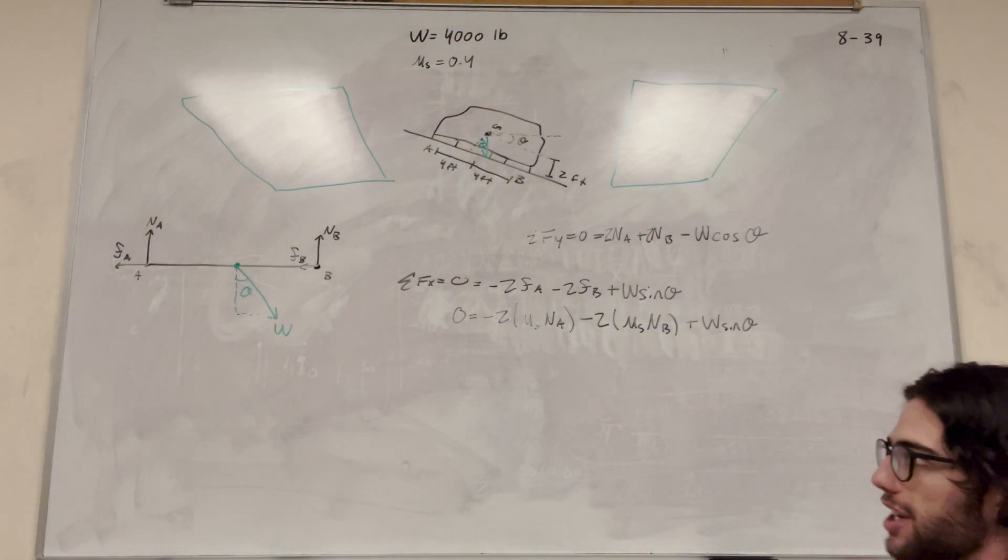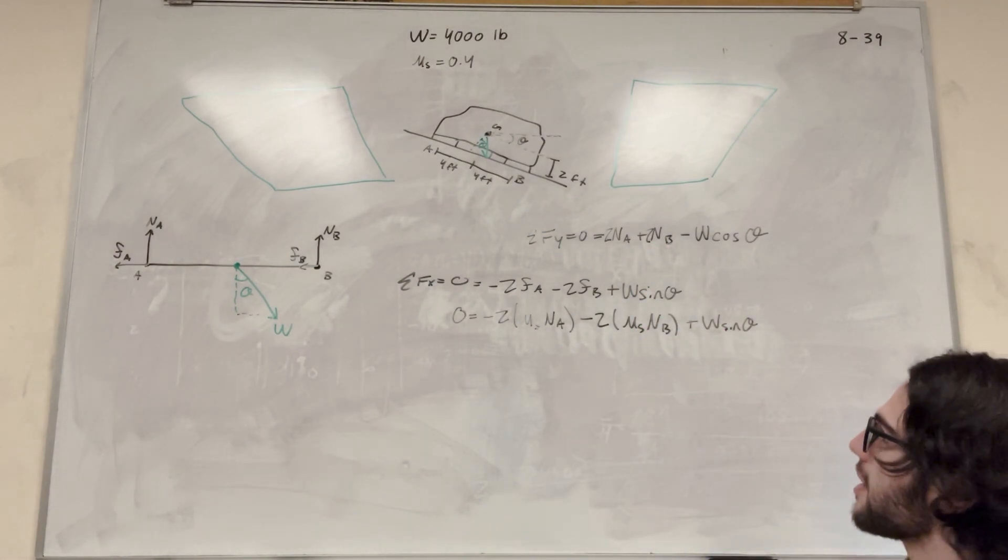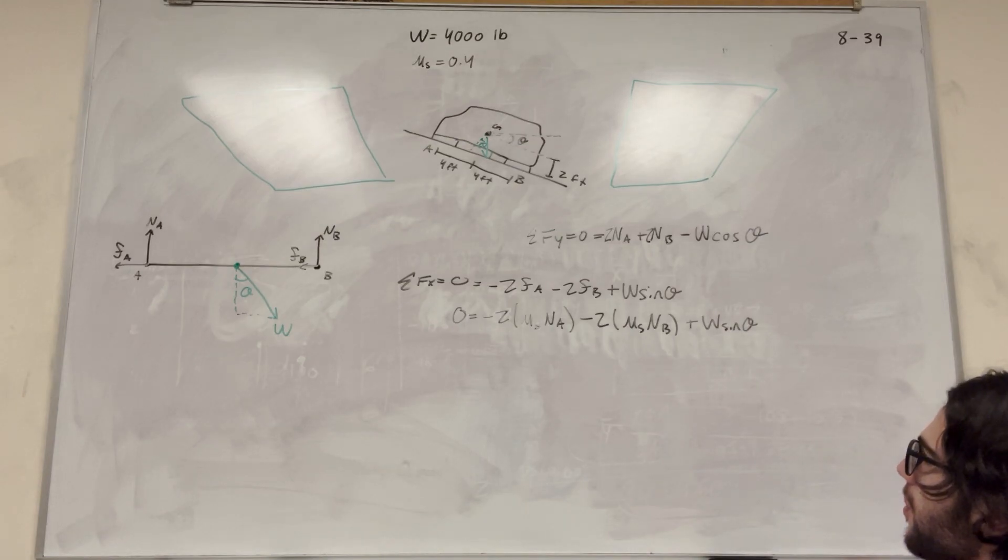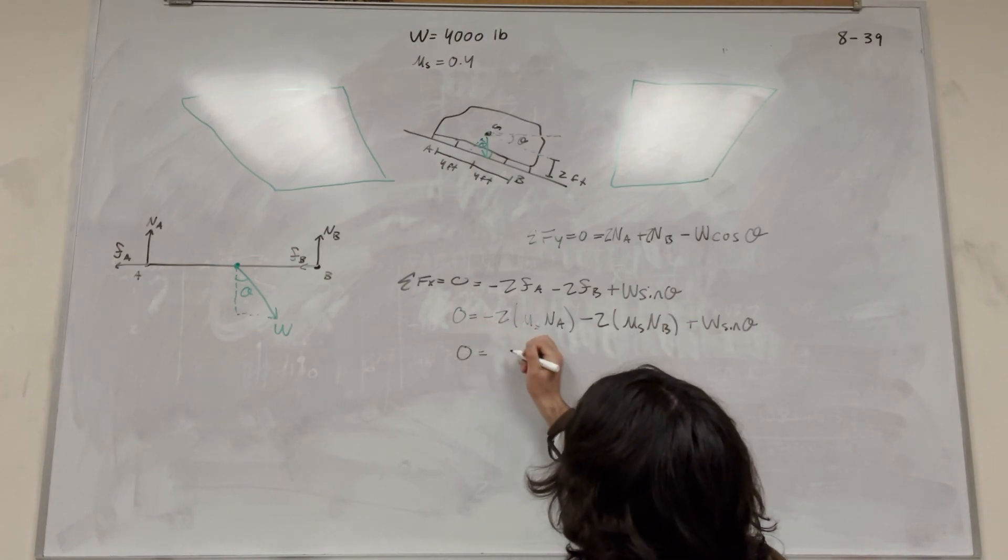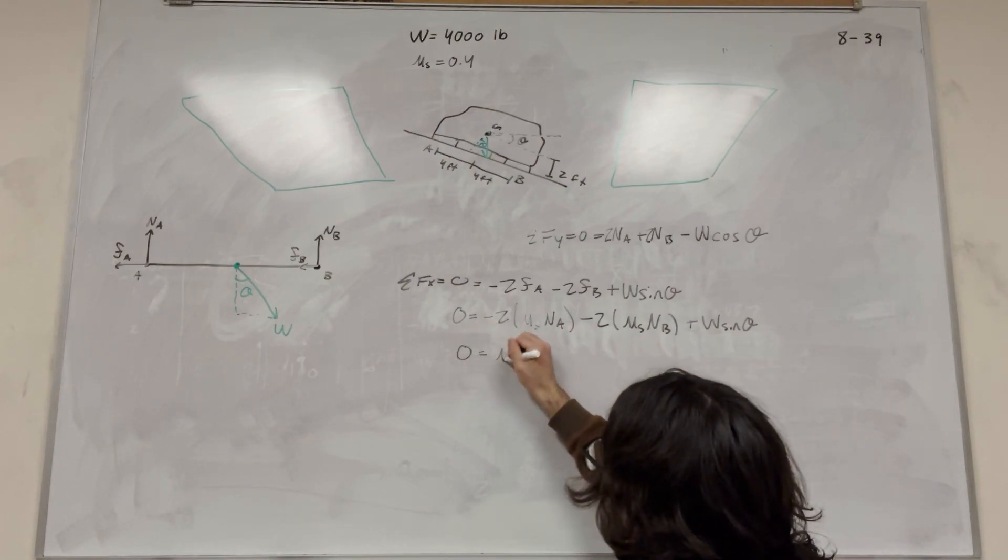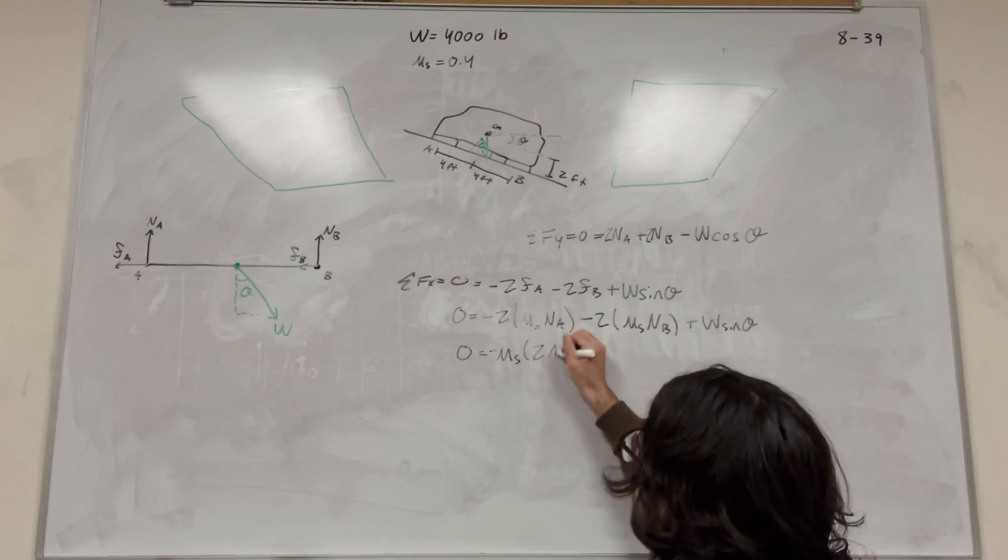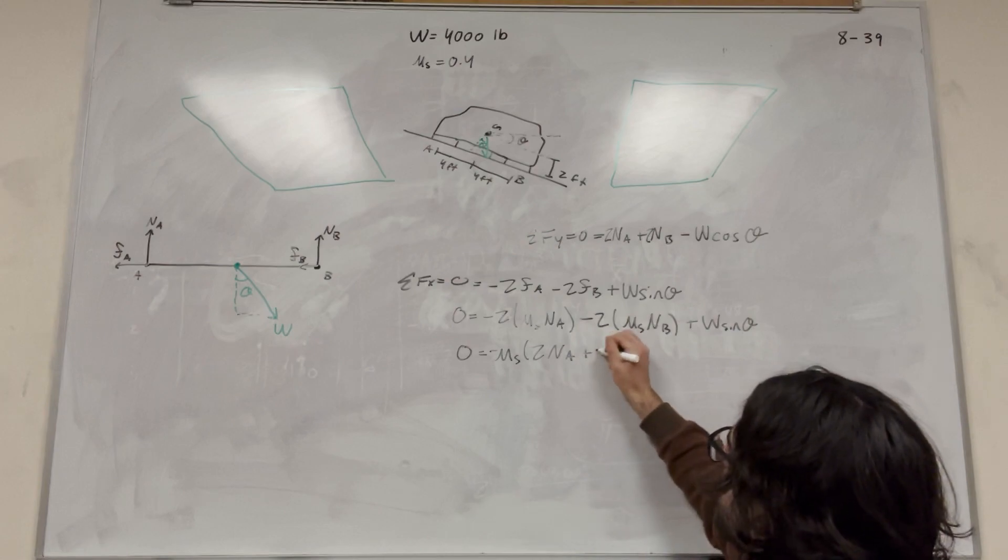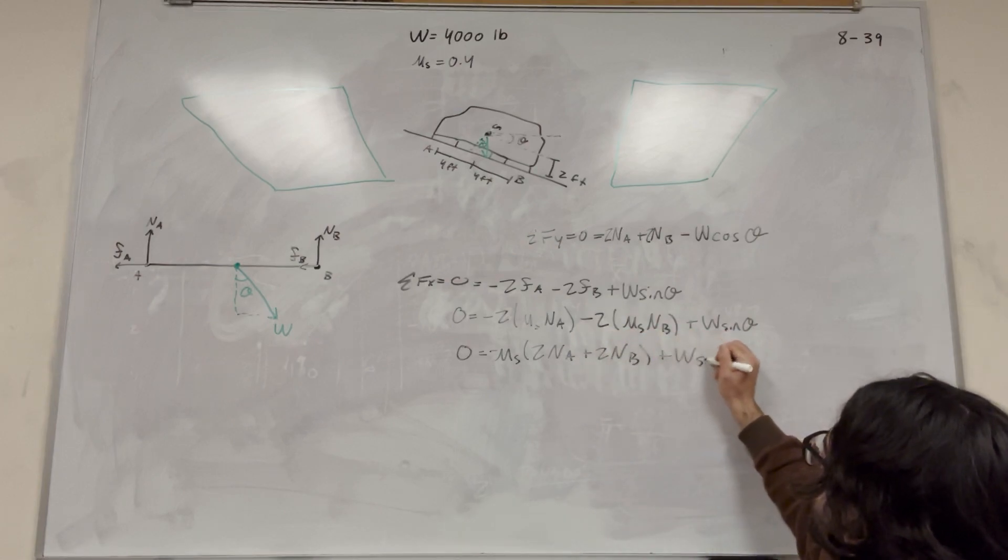And so now we have two unknowns and two equations. We don't know these two, and we don't know these two. So we want to cancel them out, basically. So let's go ahead and try to cancel these out. So maybe let's try to rearrange this equation. So it'll be zero is equal to, so let's bring out the coefficient of static friction this time, U_S, and let's bring out the negative sign. So it'll be two normal at A, plus two normal at B, plus W sine theta.